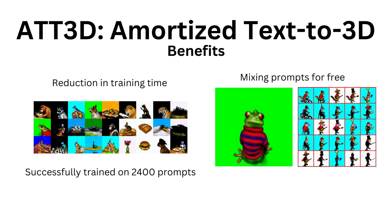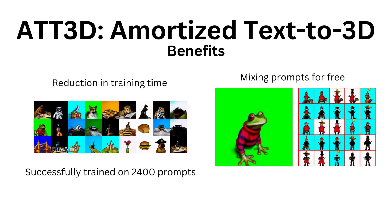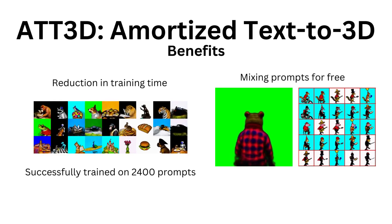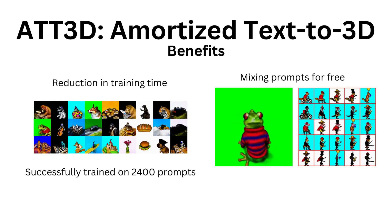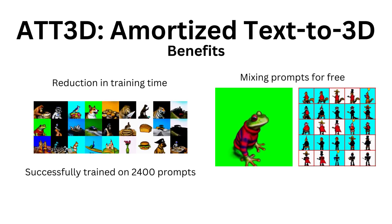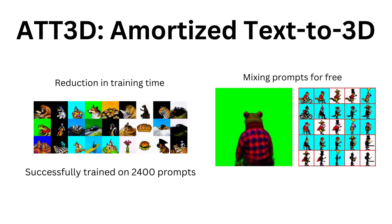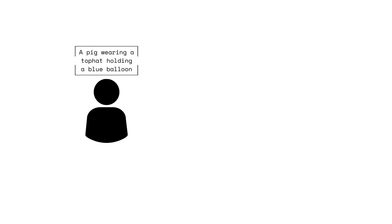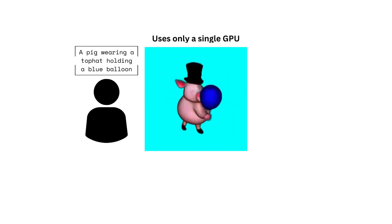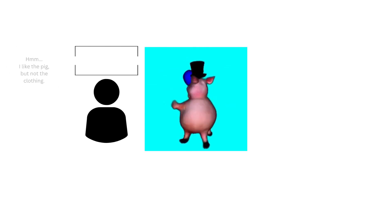Especially when content is reused, we can also mix prompts for free — either by interpolating between or composing them. Here we show going from a frog in a sweater to a bear dressed as a lumberjack, and a set of creatures doing different activities. So once a user has a setup, which may or may not have been in the training set, they can view results in less than a second while using only a single consumer-grade GPU, enabling a seamless design process.